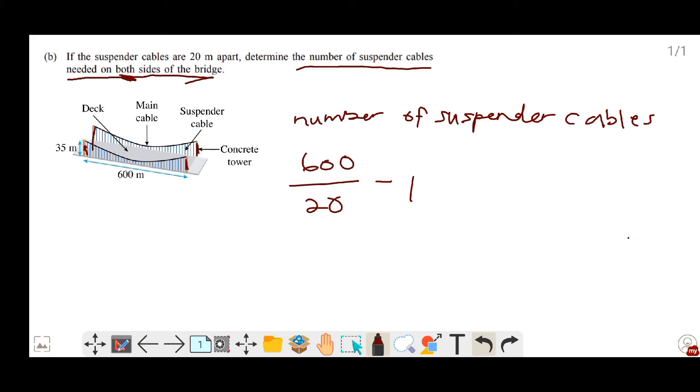Since the question wants us to determine the number of suspended cables on both sides of the bridge, we just times 2 the calculation, and then press calculator, and you will get the answer which is 58.